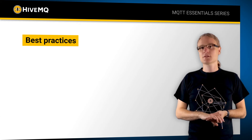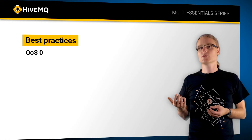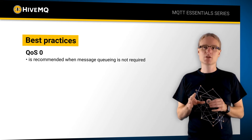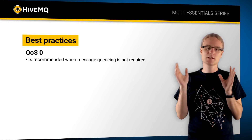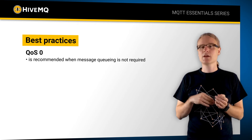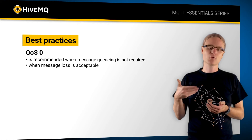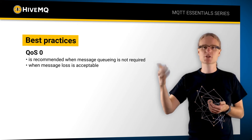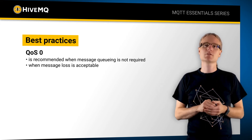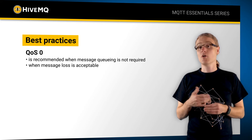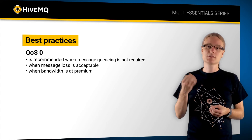Let's talk about best practices. Use quality of service zero when you don't need message queuing at all — meaning you don't need a message to survive multiple TCP connections. If message loss is acceptable, QoS zero is also great. For high-frequency messages, like temperature data published every few seconds, a lost message probably doesn't matter. QoS zero is also the right choice if you have limited bandwidth, since it has the least overhead.